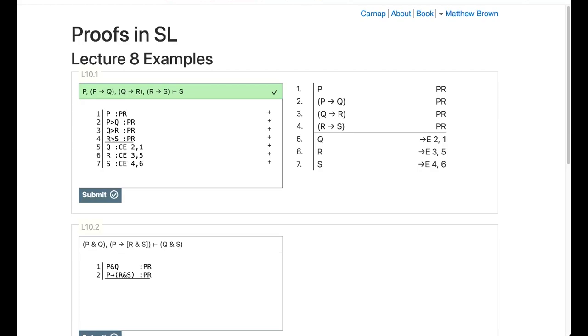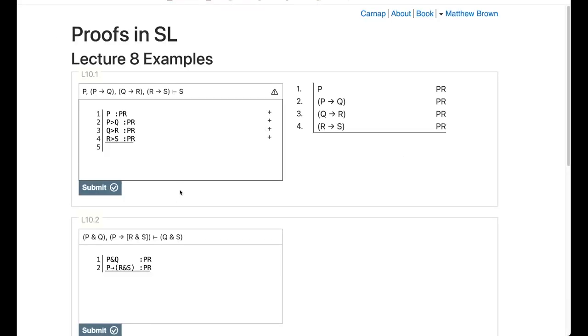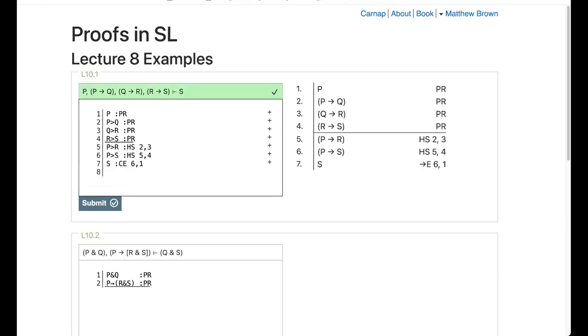Another way we could do it is to use one of our derived rules that we talked about last time, which is the hypothetical syllogism. Just to remind you how the hypothetical syllogism goes, if I have two conditionals, A then B, B then C, I can derive if A then C. So let's go back and try it that way. I have P then Q, Q then R, so I can get P then R through hypothetical syllogism, lines 2 and 3. So I got P then R, and I can get P then S the same way, hypothetical syllogism on line 5 and 4. And now I have if P then S, and I have P, so I can get S through conditional elimination on line 6 and 1. Another valid proof.